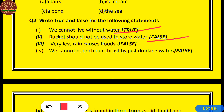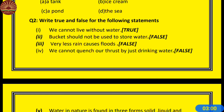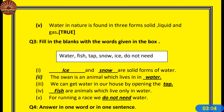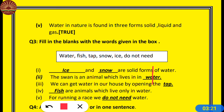Drought means sukha. Number 4: We cannot quench our thirst by just drinking water — False, we quench our thirst by drinking water only. Number 5: Water in nature is found in 3 forms — solid, liquid, and gas — True, 100% true. Solid is ice or snow, liquid is water, and gas is steam through evaporation.